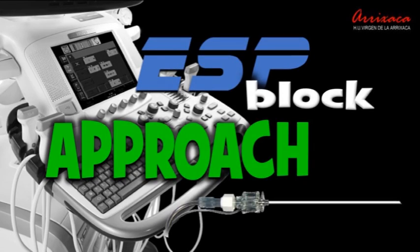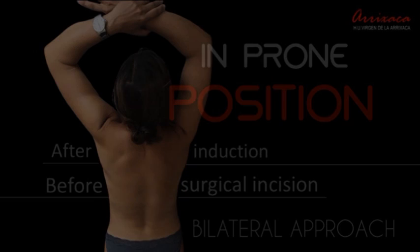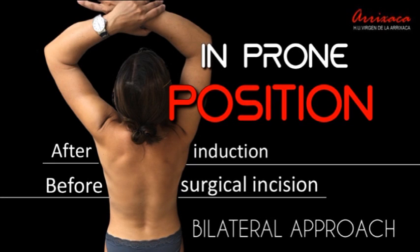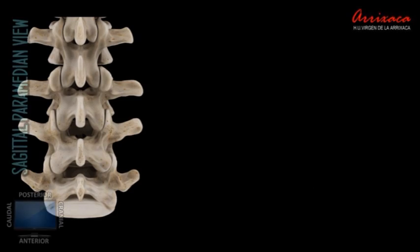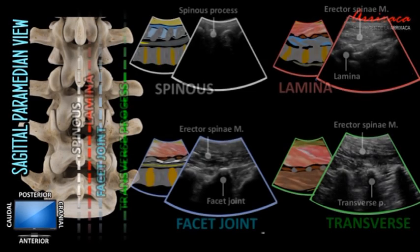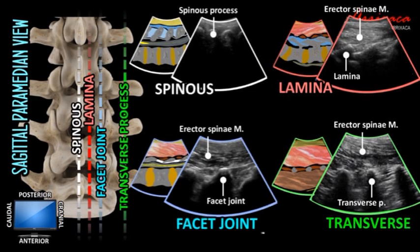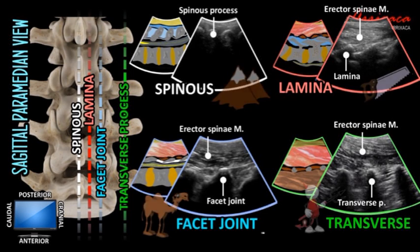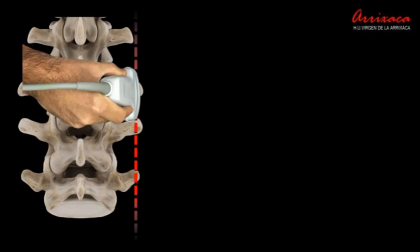The erector spinae plane block is a bilateral procedure that is performed once the patient has been anesthetized and placed in prone position for surgery. The understanding of the lumbar spine anatomy is essential to perform this procedure. The identification of the lumbar transverse processes in a paramedian sagittal plane is critical to perform the block.